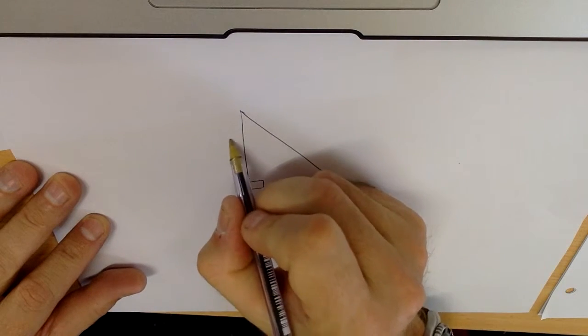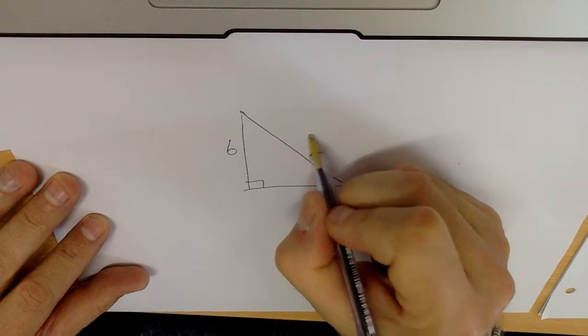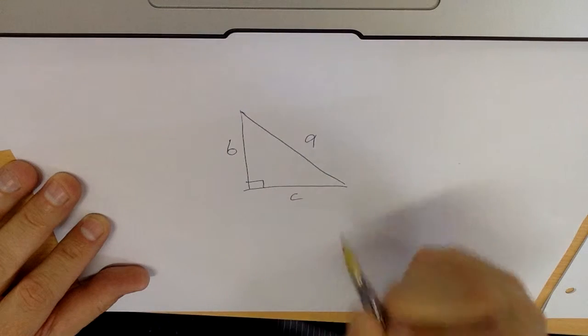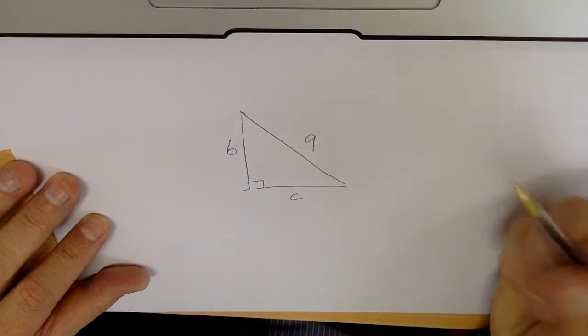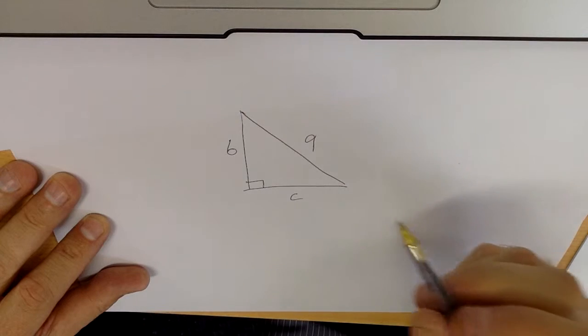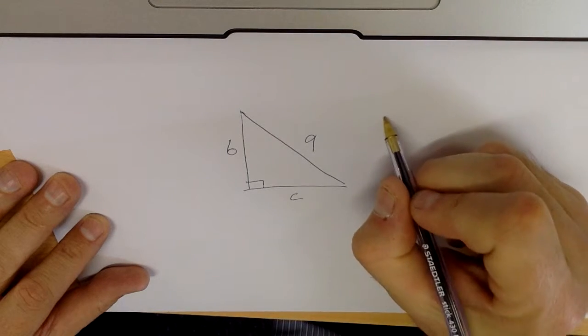say I don't care. I'm going to call this side 6, this side 9, and I'm going to find this side here. I do that by using the equation.